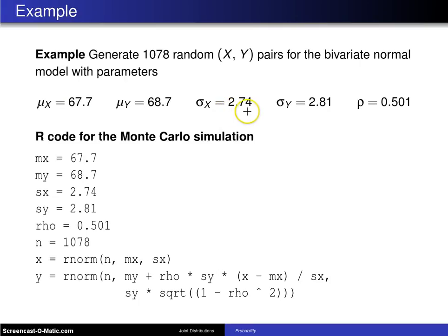68.7, 2.74, 2.81, and 0.501. You may recognize these as the values that were used earlier associated with Carl Pearson's data set.